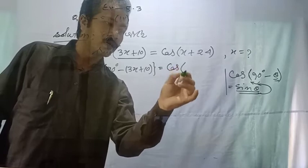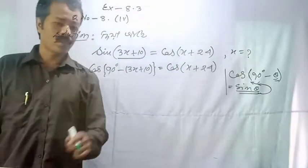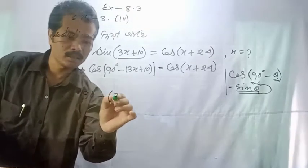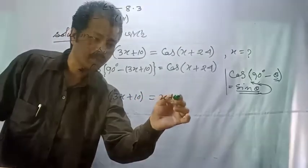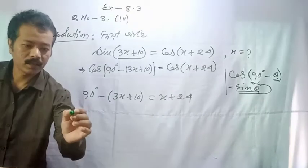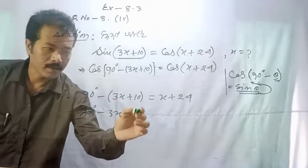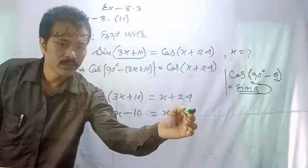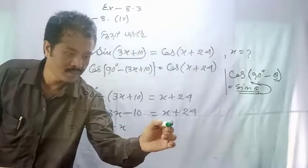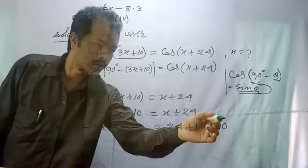This is cos x plus 24. So we will have x plus 24 plus 10 minus 90.